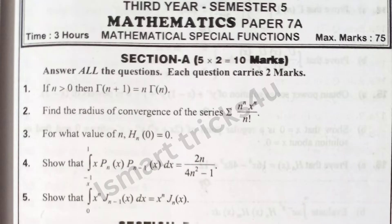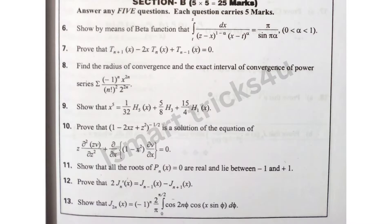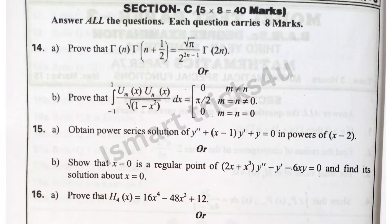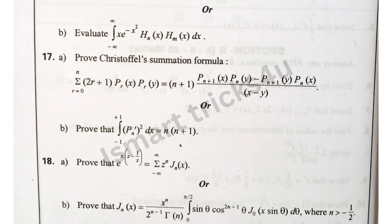3rd model paper: Section A — very short, 5 x 2 = 10 marks. Section B — 5 x 5 = 25 marks. Section C — 5 x 8 = 40 marks.